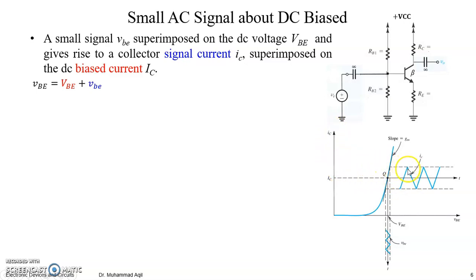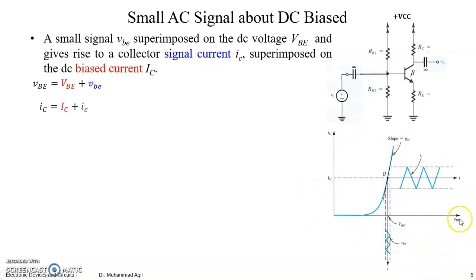These graphs are very important because they are compact in nature and provide all the AC and DC quantities for the components for which the plot is drawn. At any instant you can read the total value, and subtracting the DC value gives you the AC value. So varying VBE gives you a varying collector current.